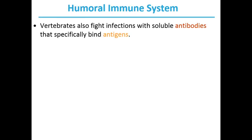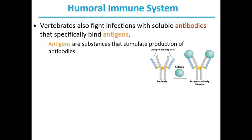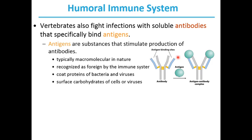Vertebrates fight infections with soluble antibodies that specifically bind antigens. What are antigens? Antigens are substances that stimulate the production of antibodies, and every antibody has two antigen binding sites. An antigen is any molecule recognized by an antibody. Antigens are typically macromolecular in nature, recognized as foreign by the immune system — examples include coat proteins of bacteria and viruses, and surface carbohydrates of cells or viruses.